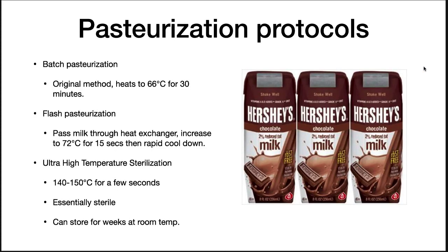There are three popular methods of pasteurization. The original batch method consisted of heating a sample to 66 degrees centigrade for 30 minutes. Scientists discovered that raising the temperature just 6 degrees shortened the treatment time necessary to 15 seconds. This high temperature made way for continuous methods where material passes through tubing in a heat exchanger and then rapidly cools down, allowing large quantities of liquid to be pasteurized with a reasonably small unit. Ultra-high temperature sterilization heats liquid to 140 to 150 degrees centigrade for a few seconds, eliminating all microorganisms. Materials can be stored for weeks at room temperature after treatment, though many consumers are still getting used to products like room-temperature milk.